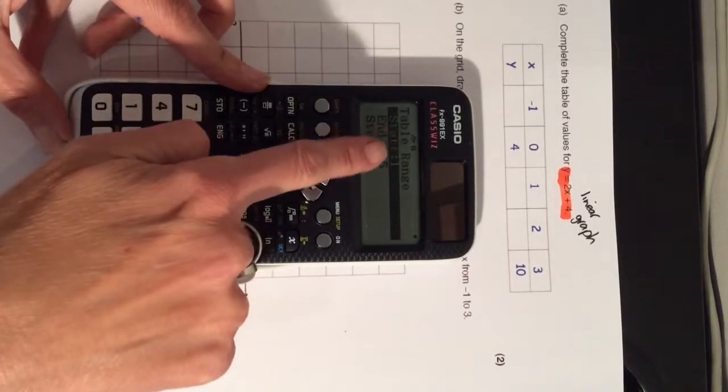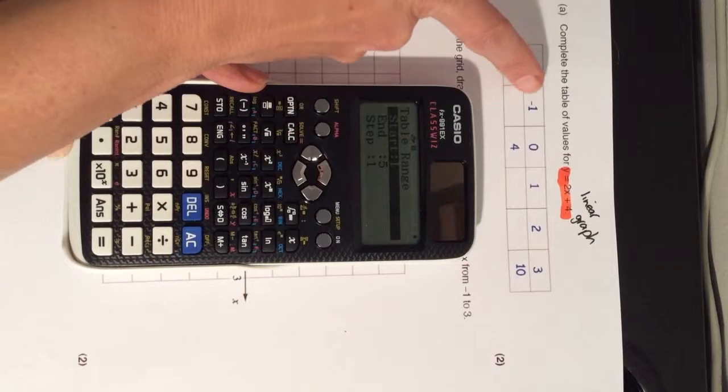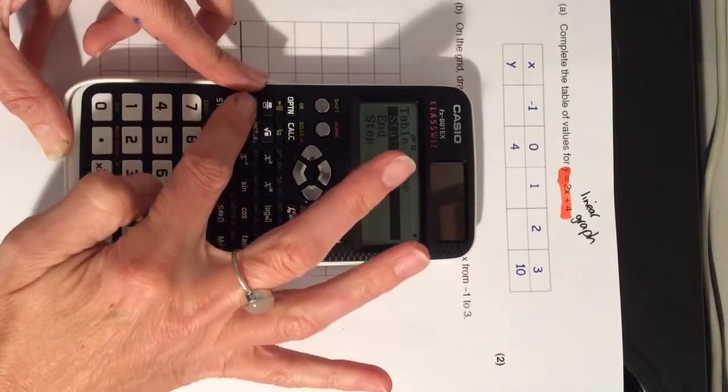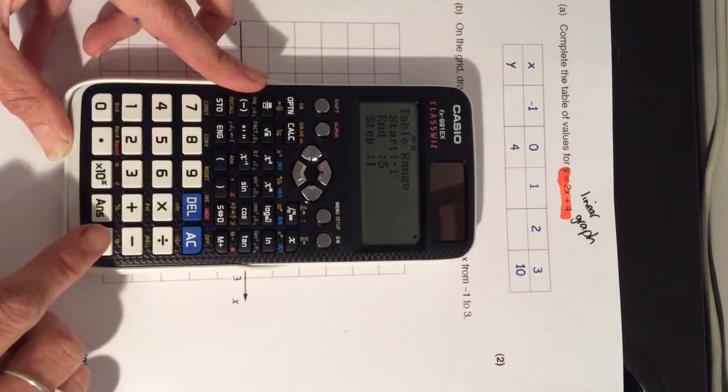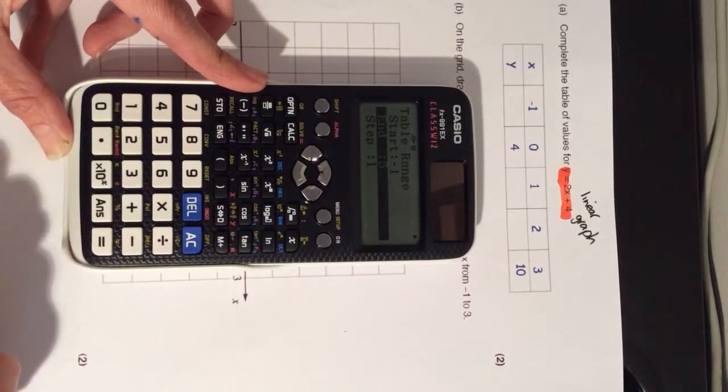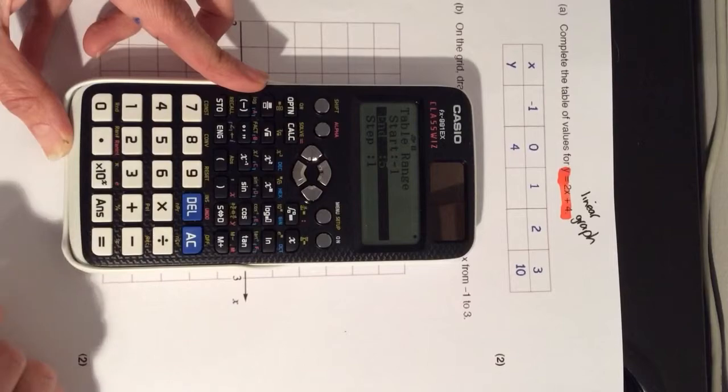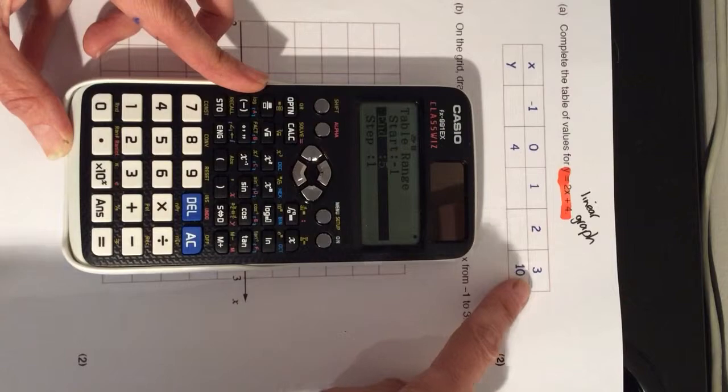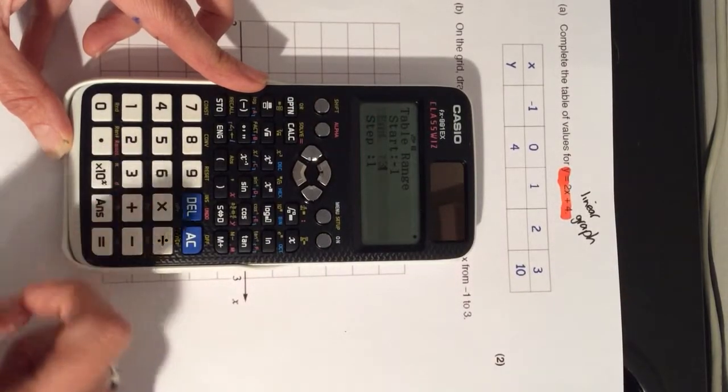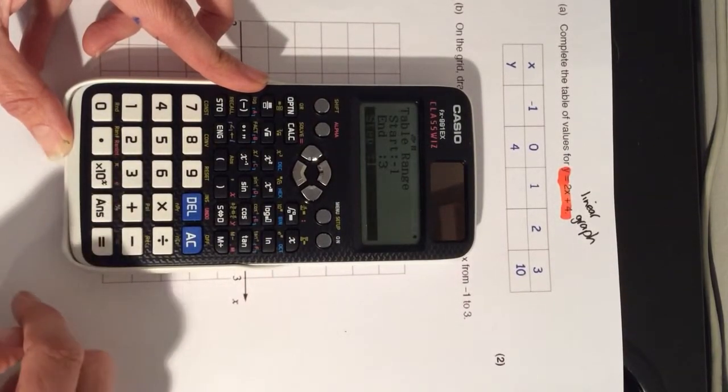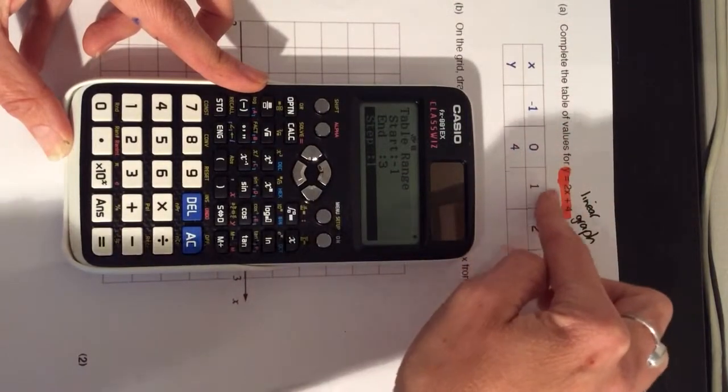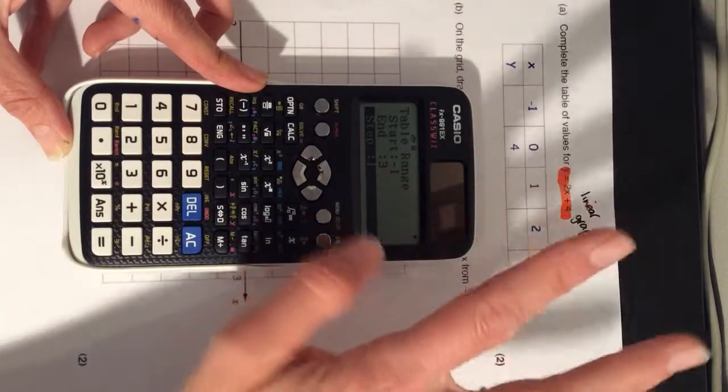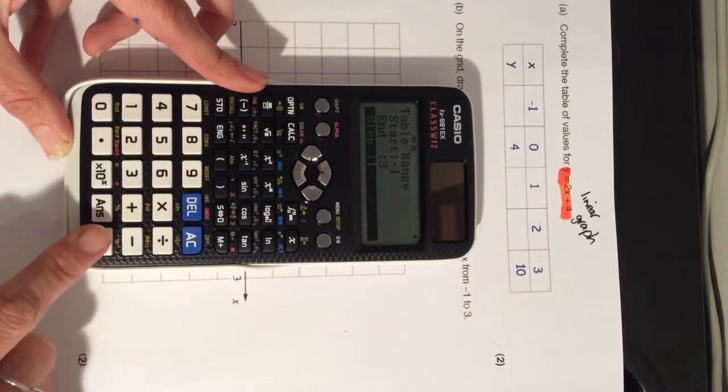Now, it's asking me where I want to start my table from. My table of values start at minus 1, so I'm going to go ahead and put minus 1. And then, I'm going to press equals and it brings me down to the next line and it says end. My table of values ends at 3, so I'm going to put in 3 and I'm going to press equals. The x values are going up in steps of 1. It's already got 1 input there. So, I'm just going to go ahead and press equals.